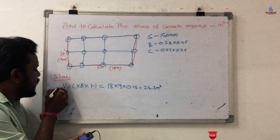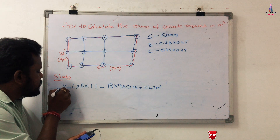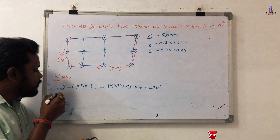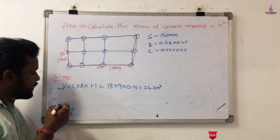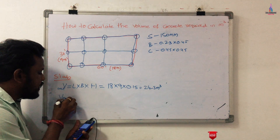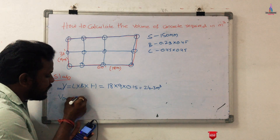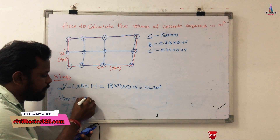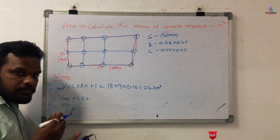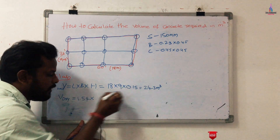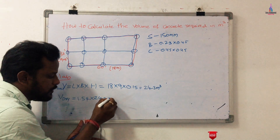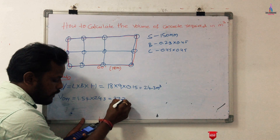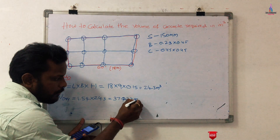We construct the slab, beam, and column sections in wet condition. To convert wet volume to dry volume, we use a multiplication factor of 1.54 as per IS code provisions. Multiplying 24.3 by 1.54 gives approximately 37.422 cubic meters. This is the dry volume of concrete required for the slab section.